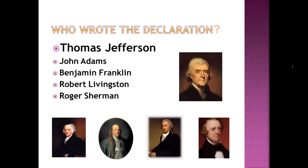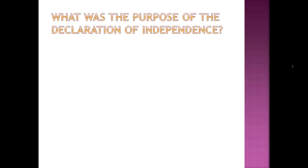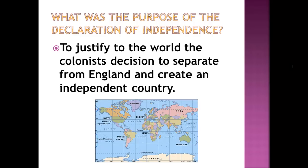Jefferson then presented his finished document to the rest of the committee for approval or revisions. They did remove his statements about slavery, and several other revisions were made to the document. The colonists felt the need to justify their decision to separate from England to the world. They wanted the world to accept their new country and continue to trade with the colonies, so it was important that the world be aware of the ways they felt England had failed them.